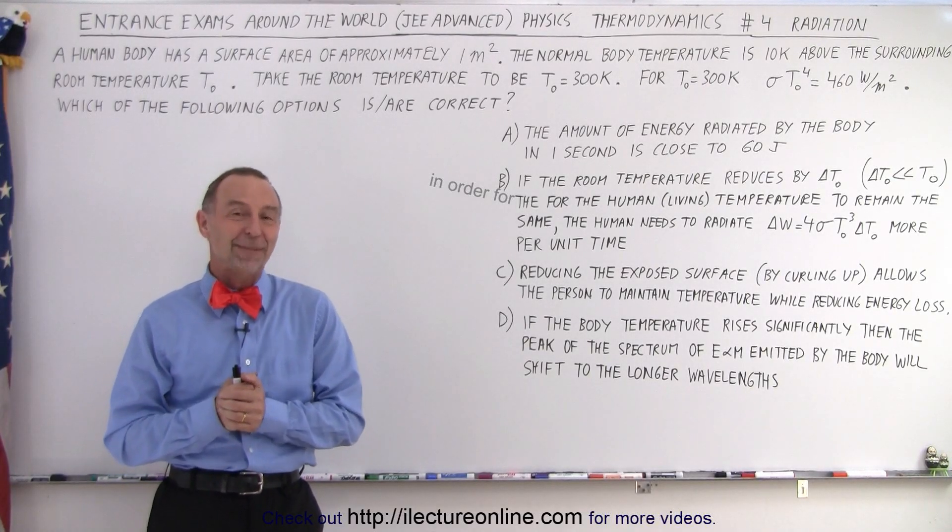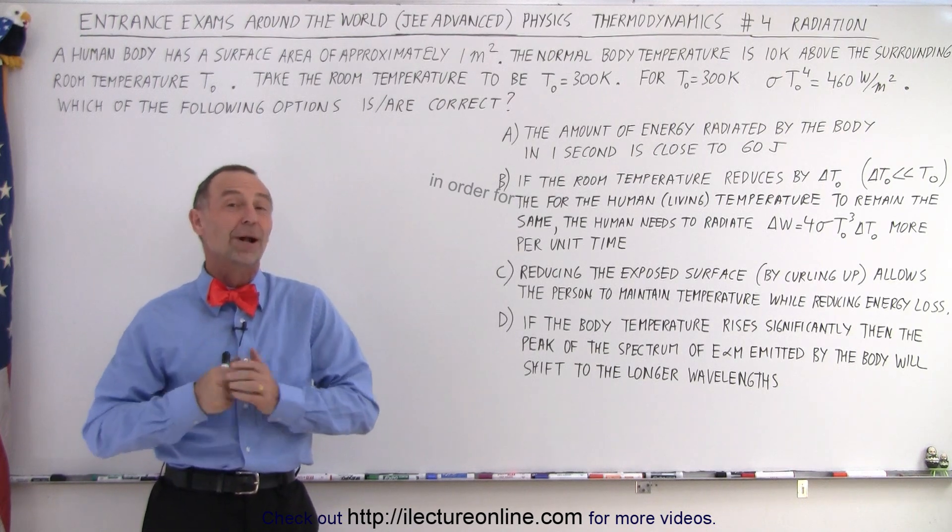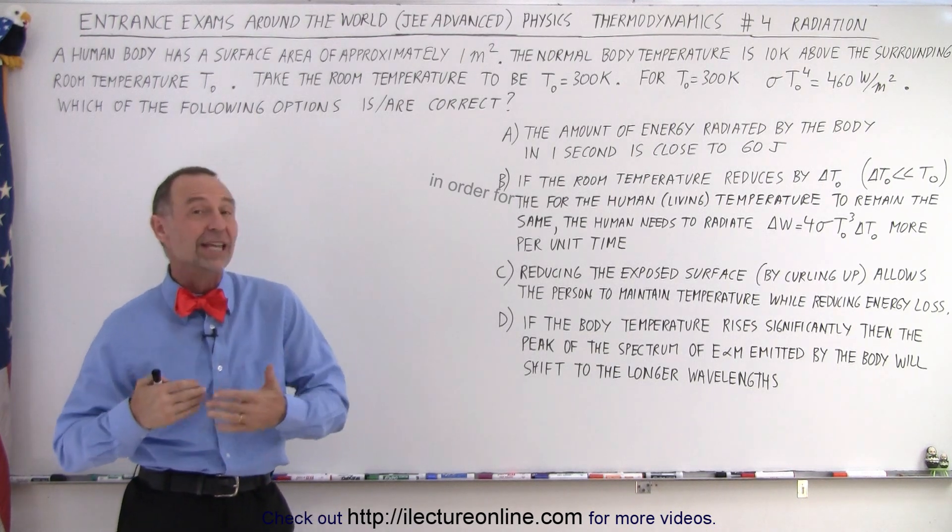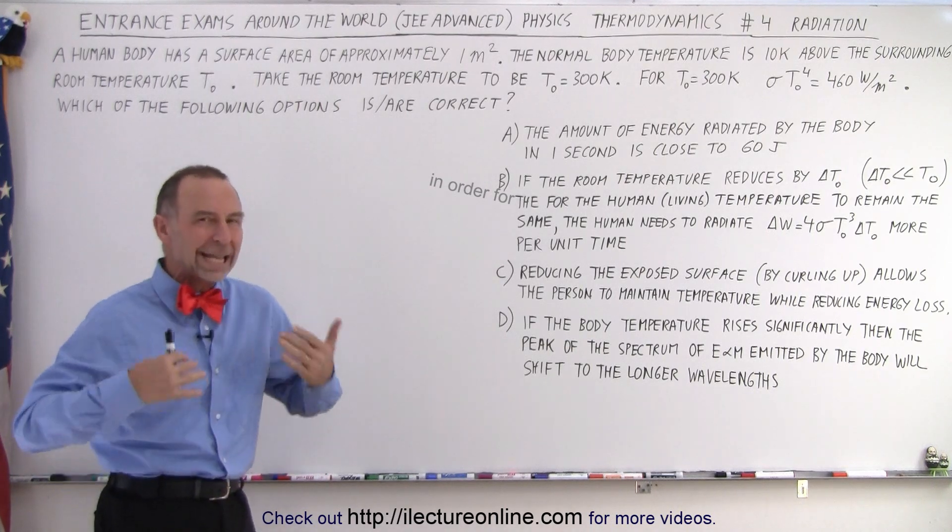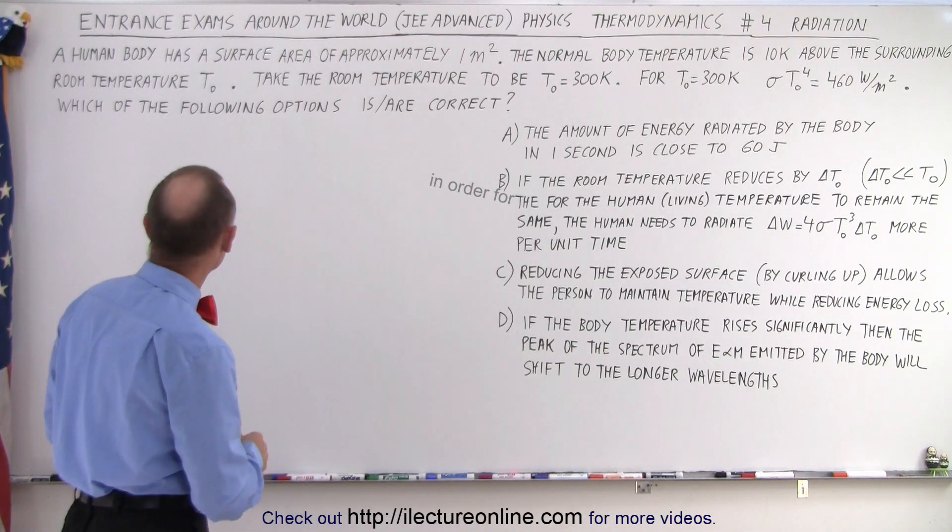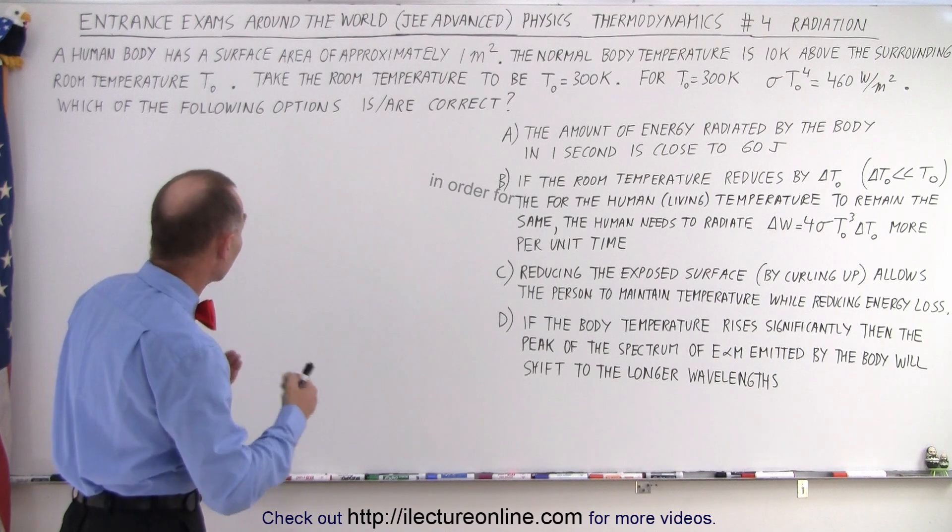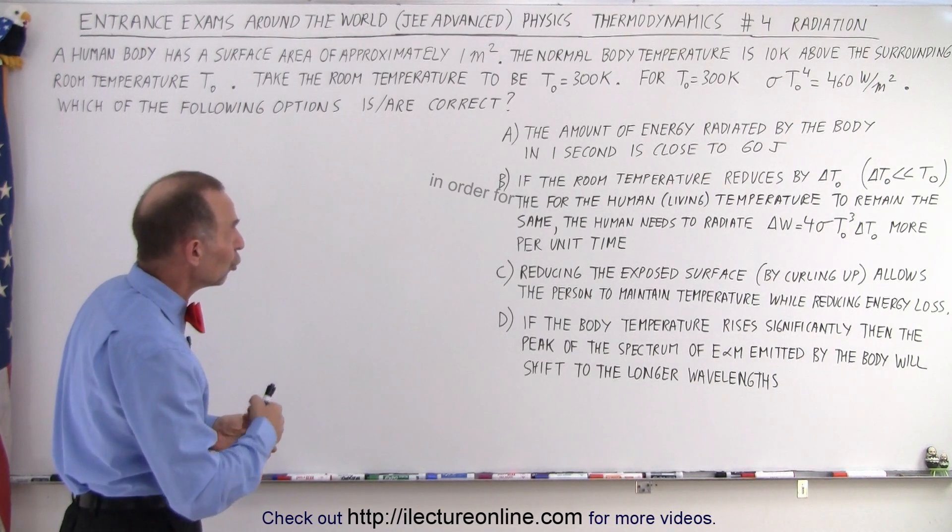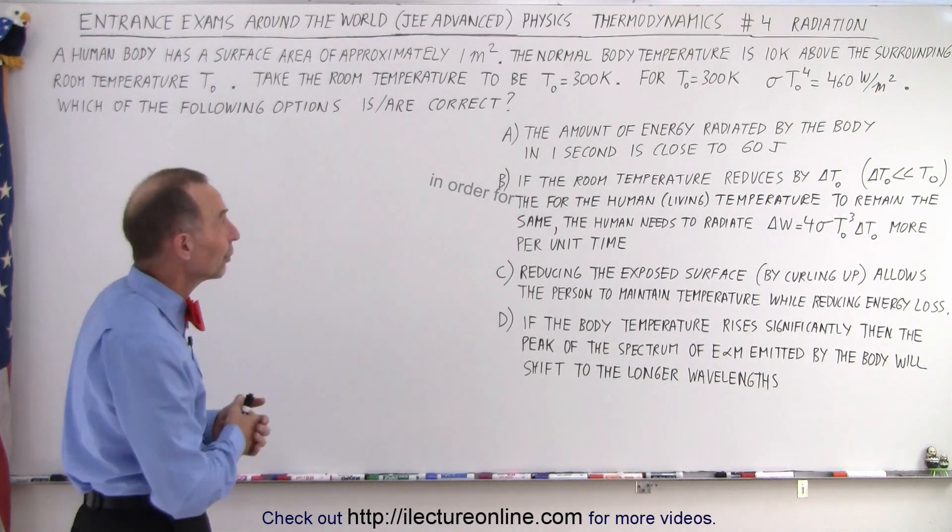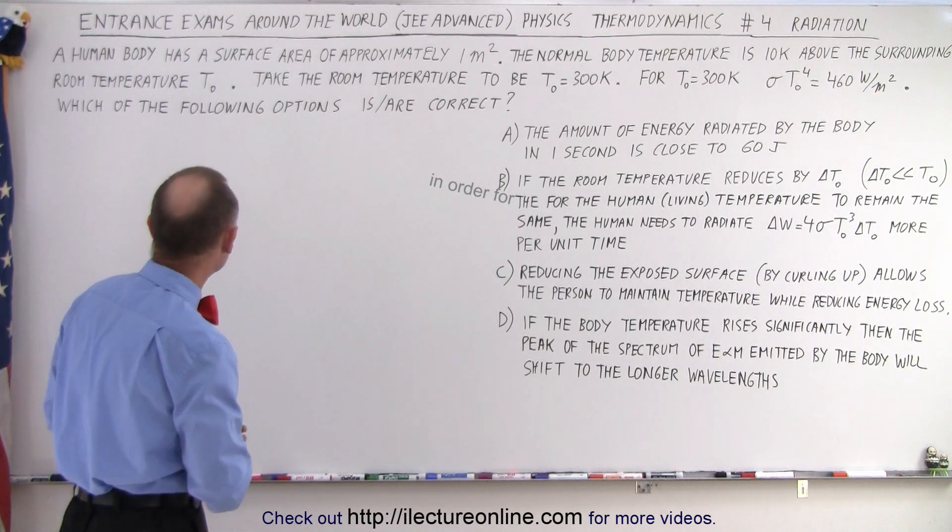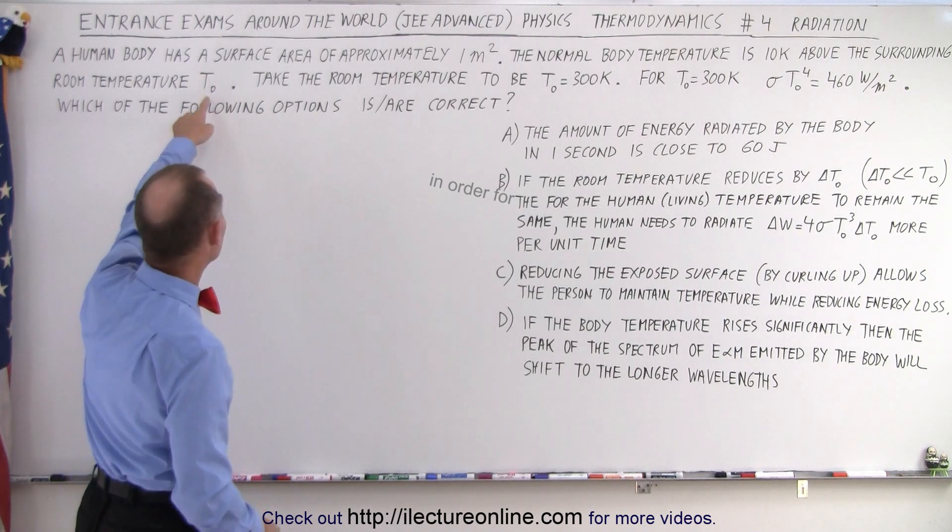Welcome to our lecture online. Here we have another very interesting problem from a past JEE Advanced test dealing with thermodynamics, in this case radiation from the human body. So they tell us that a human body has a surface area of approximately one square meter. The normal body temperature is 10 K degrees above the surrounding room temperature, which is set at T sub-naught.